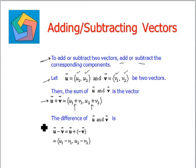Similarly, in case of the difference of u and v, this is given by vector u minus vector v. This can be written as vector u plus negative of vector v. So this will be u1 minus v1 comma u2 minus v2. Again here, u1 and v1 are subtracted while u2 and v2 are subtracted. So the corresponding components are subtracted.